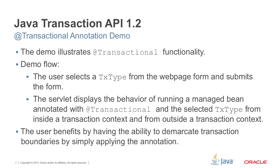The @Transactional annotation demo will illustrate each of the transaction types, which are the same behaviors as those found in EJB CMT. The servlet in the demo displays the behavior of running a managed bean annotated with @Transactional for each transaction type, from both inside a transaction context and outside a transaction context. We're not actually doing any database work or anything like that — we're just displaying the actual instance information. The user benefits by having the ability to simply demarcate transaction boundaries with an annotation.